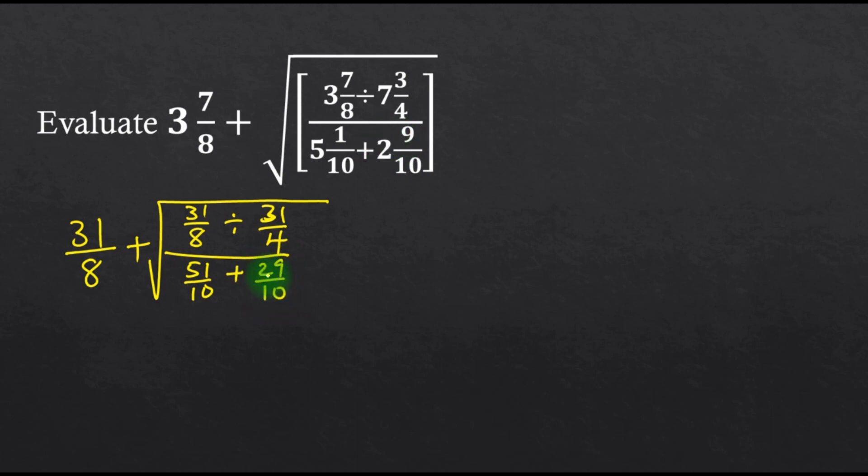From there we move on. We have 31 over 8 plus the square root of 31 over 8, which will be multiplied by its reciprocal, that is 4 over 31, all over...